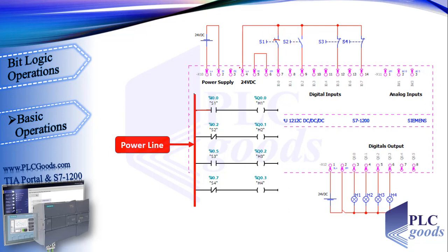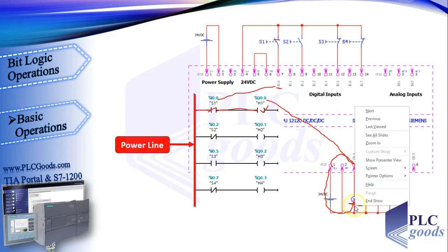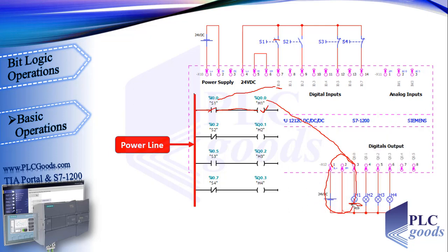If we press the push button, the 24V DC reaches I0.0. Then the state of this contact with I0.0 address changes to 1 or true, so its normally open state changes to close. Now the virtual power can reach to this coil with Q0.0 address, which refers to the first PLC output. So the PLC changes its state and lets the 24V DC turn on the H1 lamp. Briefly, reaching 24V DC to our digital inputs is the same as pressing push buttons in real.